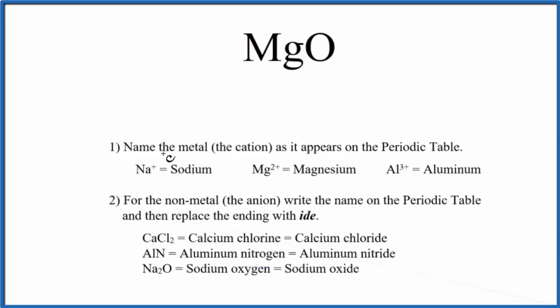So we start out by writing the name of the metal as it appears on the periodic table. So Mg, that's magnesium.